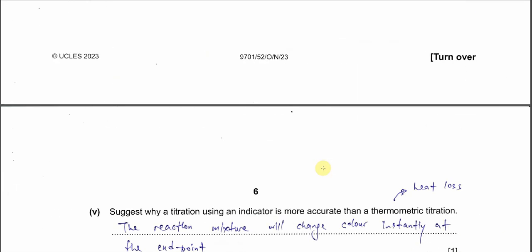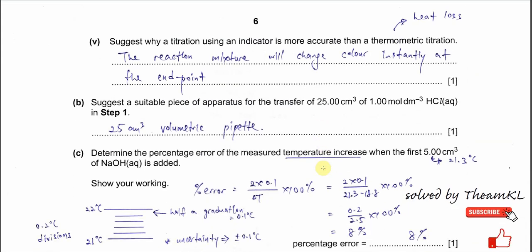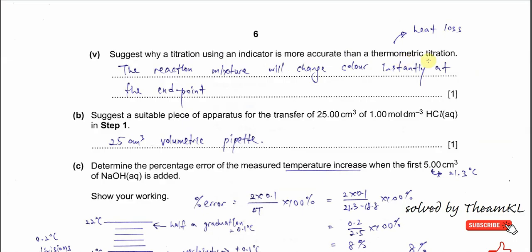Now, suggest why titration using an indicator is more accurate than thermometric titration. You can include the heat loss argument: because 5 cm³ is added, then stirred, then recorded — during that process heat loss occurs. Also, an acid-base indicator changes colour instantly, so we can get the endpoint easily and determine the concentration of sodium hydroxide more accurately than using a thermometer.